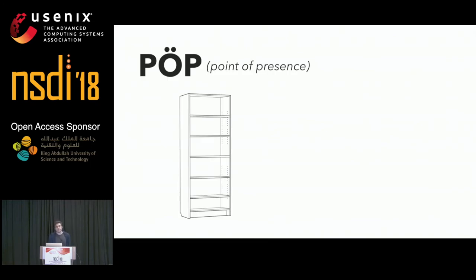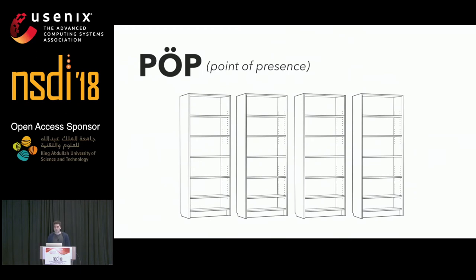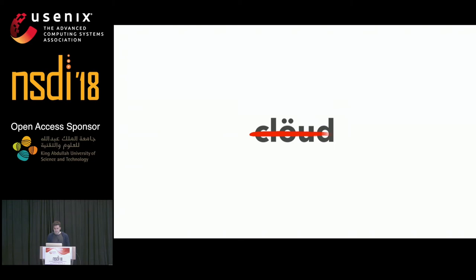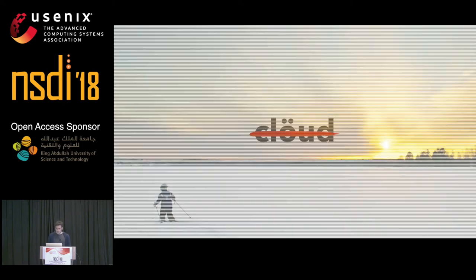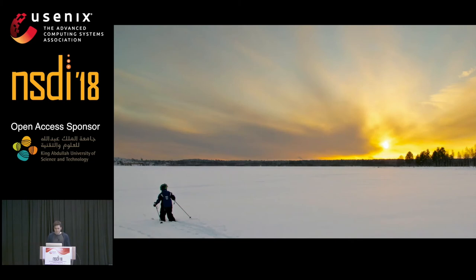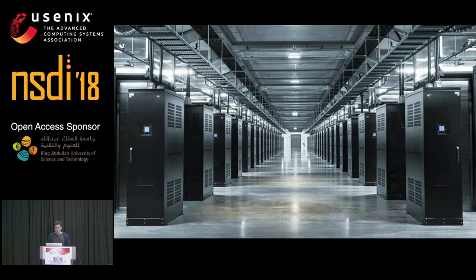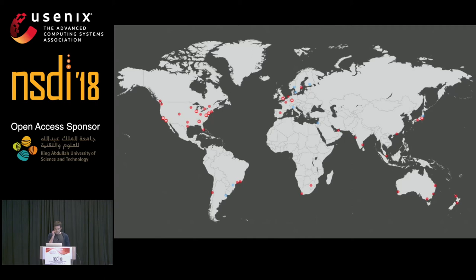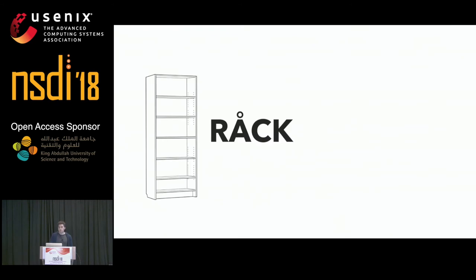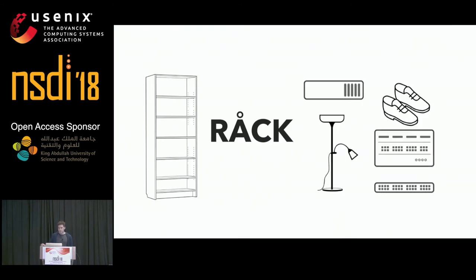The fundamental building block of an edge network is a point of presence. The major design aspect of a POP is physical space — you might have one rack, half a rack, or many racks — but space is the fundamental constraint. This is not cloud computing data center stuff. You have to build POPs in some of the most densely populated and overpriced places in the world, so you can't forklift cloud architectures into a POP environment because you can't afford it. You just have a rack and three basic requirements to abide by.